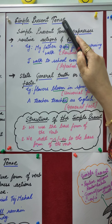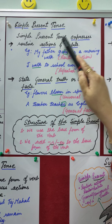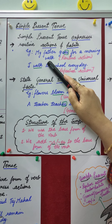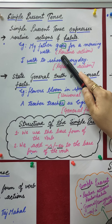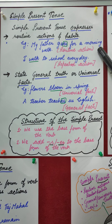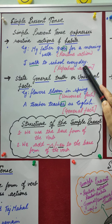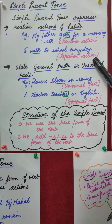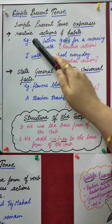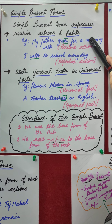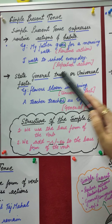What is simple present tense? Simple present tense usually expresses routine actions and habits. For example, 'My father goes for a morning walk' — it is a routine action that he goes regularly. Another example: 'I walk to school every day,' which shows a repeated action. So simple present tense expresses routine actions and habits.